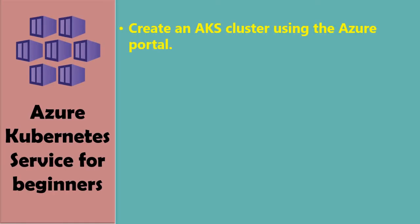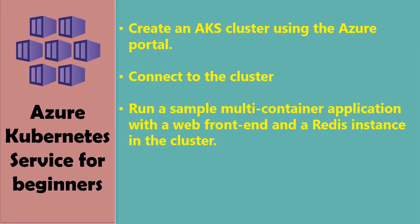The step-by-step process: we'll create an AKS cluster using the Azure portal. There are different ways — you can use the portal, automation scripts like Terraform, Azure CLI, or Azure PowerShell. To keep this video simple I'm using the Azure portal, and in future videos we'll cover automation. Once we create the cluster, we'll connect to it and run a sample application with a web front-end and a Redis backend instance, then test it through a web browser.